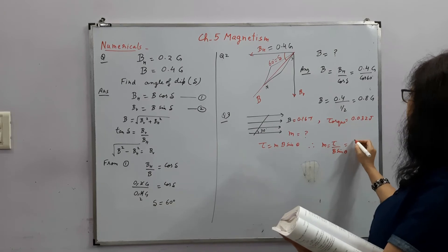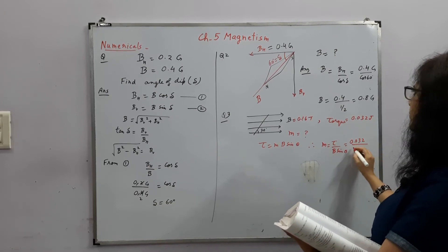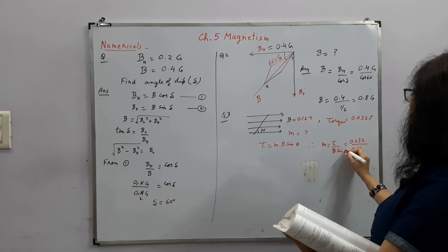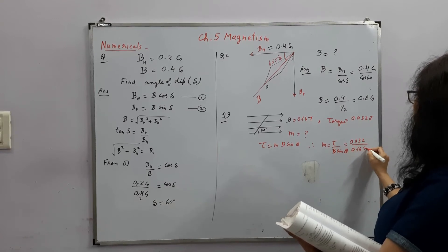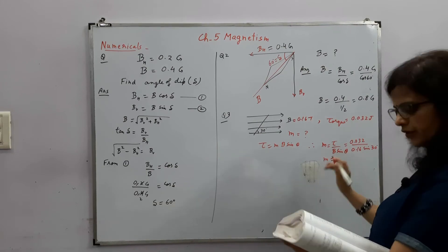So if we put all the values, this will be 0.032 upon 0.16 into sin 30 degree. So if we put the values, what will be the answer?